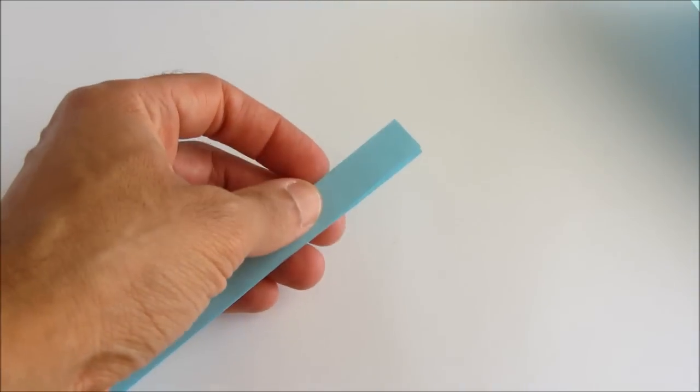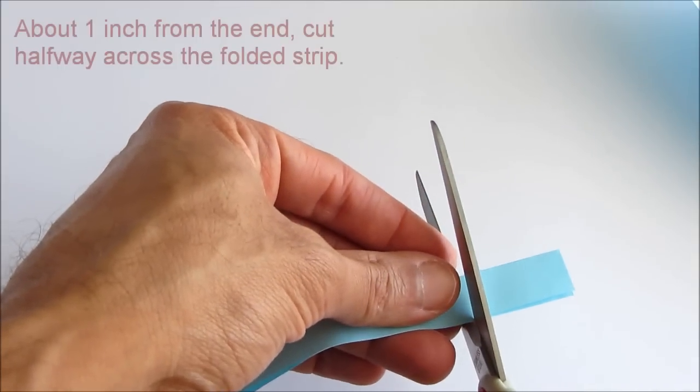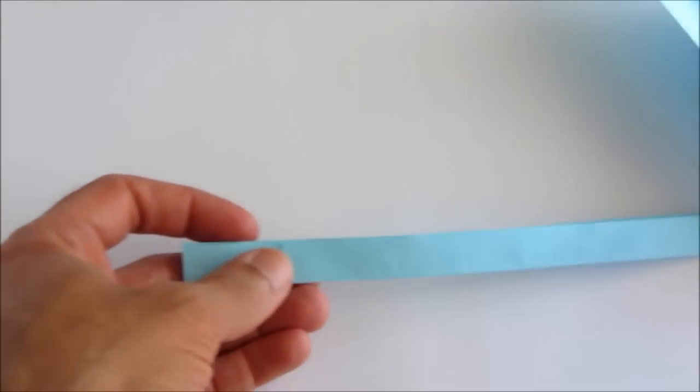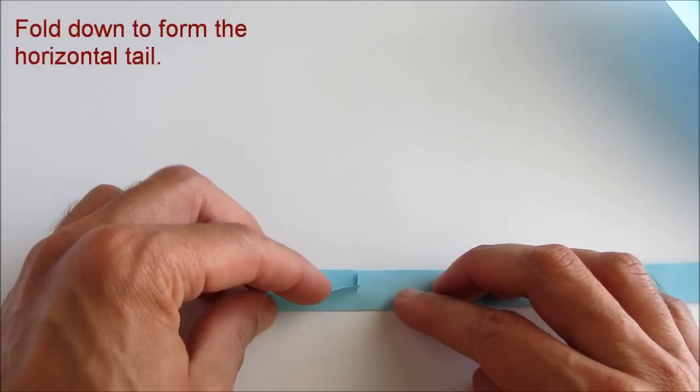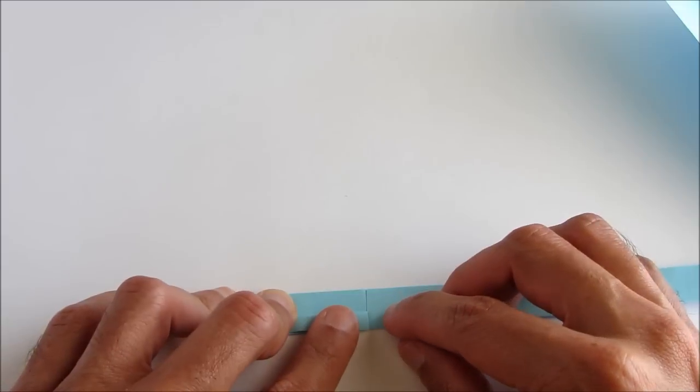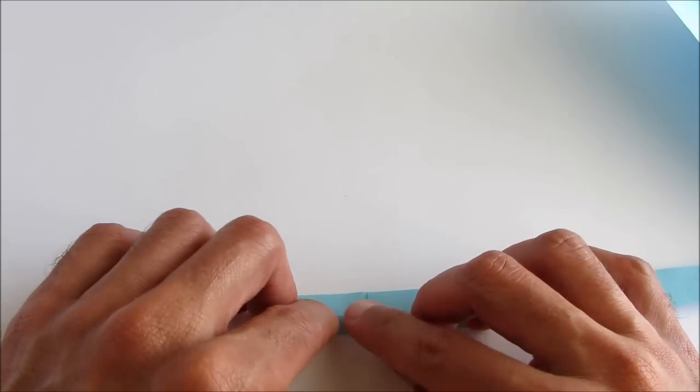And next we're going to start making the tail. So cut part way across the fuselage near the end like that. And then fold down the cut piece on both sides. So this will form the horizontal tail.